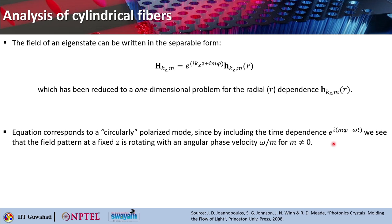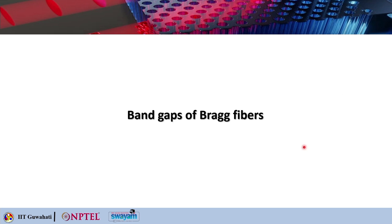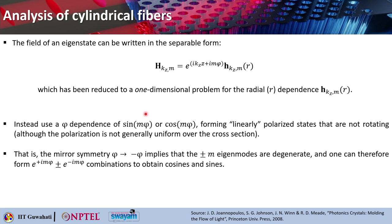Since by including the time dependence like e^(imφ - iωt), we see that the field pattern at a fixed z is basically rotating with an angular phase velocity of ω/m where m is non-zero. The field of the eigenstate — you can see what happens — that instead one can use a phi dependence of sin(mφ) or cos(mφ), forming linearly polarized states that are not rotating, although the polarization is not generally uniform over the cross section.